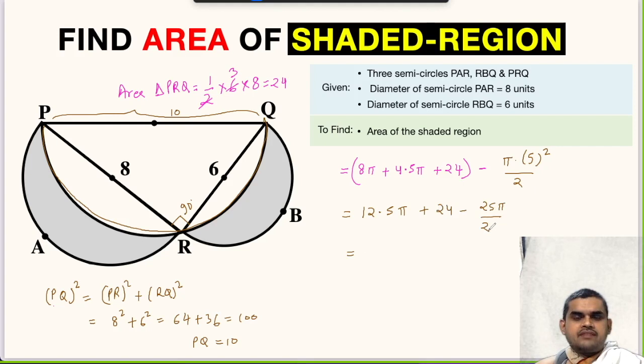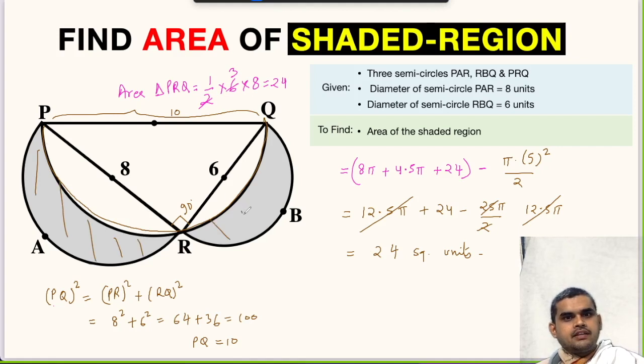25π upon 2 is 12.5π. We can cancel these two and we will be left with 24 square units. It is a coincidence that area of this shaded region is equal to area of the right triangle, because the value of both areas is 24. The final answer will be area of shaded region is equal to 24 square units.